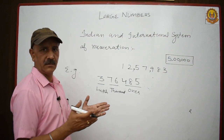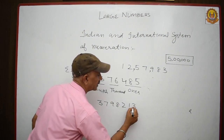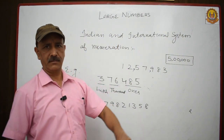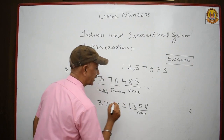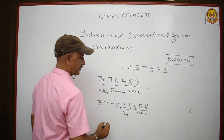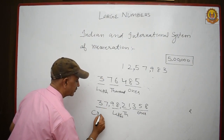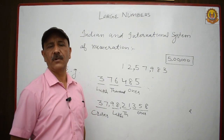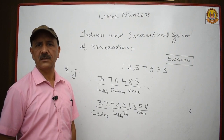Now let me give you one more example: 3,79,82,13,58. There are nine digits — one, two, three, four, five, six, seven, eight, nine. First comma after three digits, then comma, then comma, then comma. So in national system we have ones, thousands, lakhs, and crores. That is what we are representing.